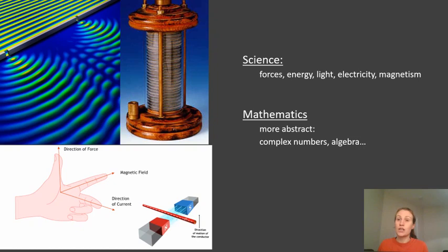So he figured out how you can use electricity to make things move. All of these investments in science and physics drove advances in mathematics because new, more complex maths and more abstract maths was needed to describe these new things and to understand these new things.